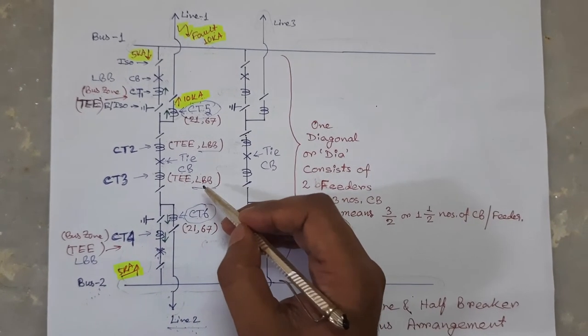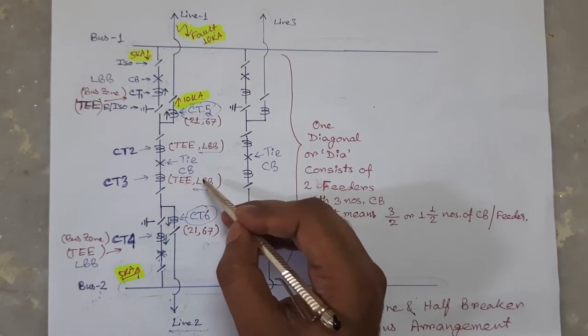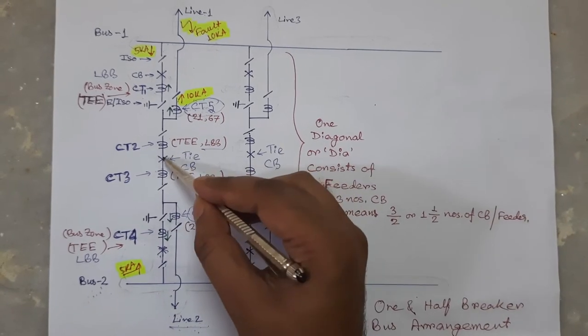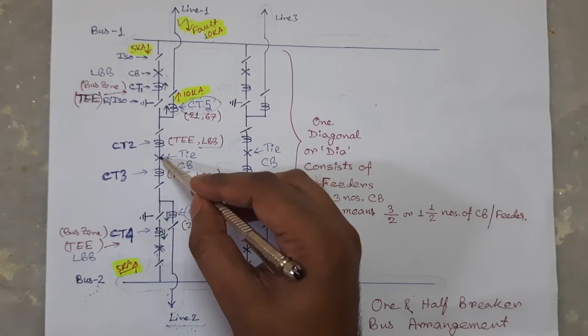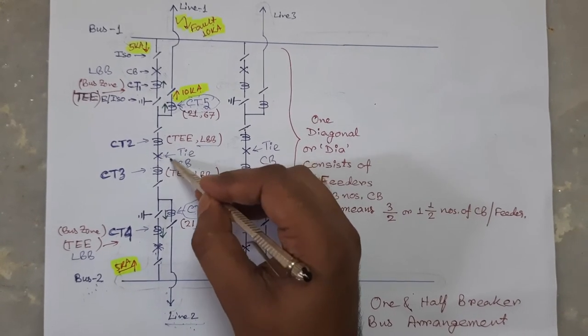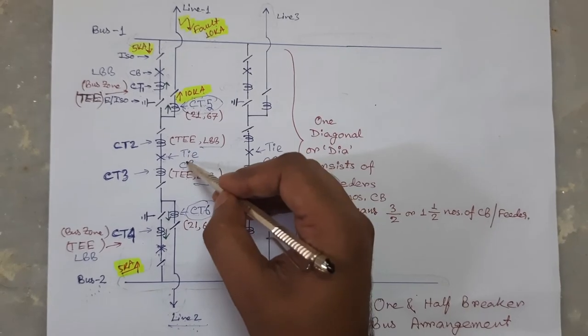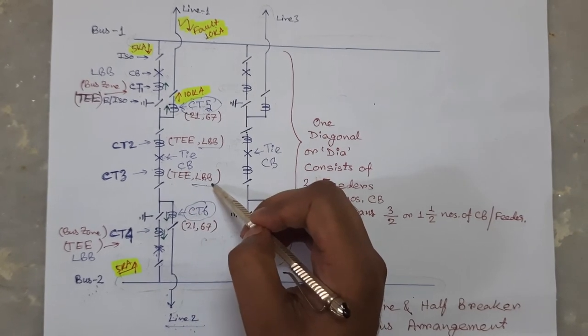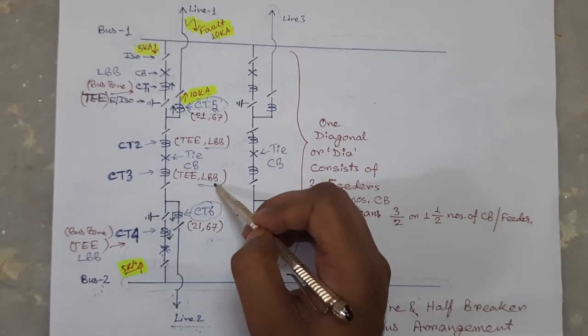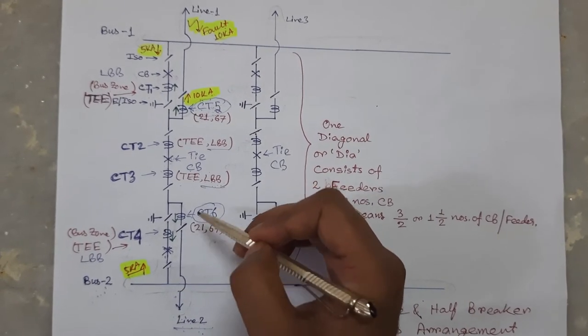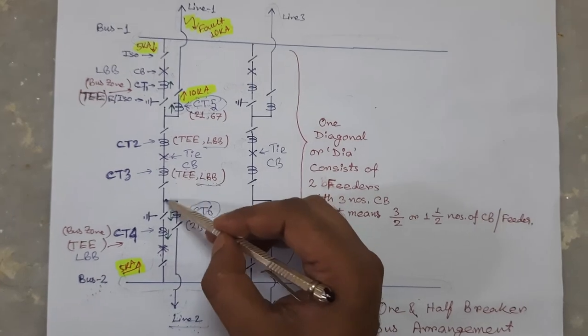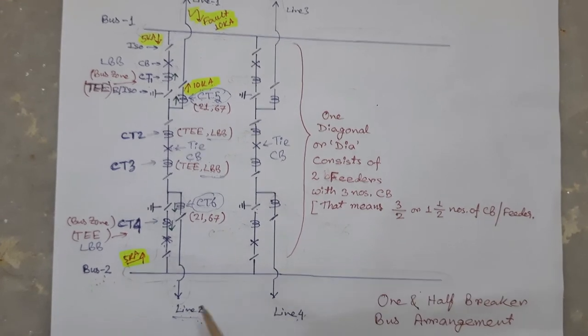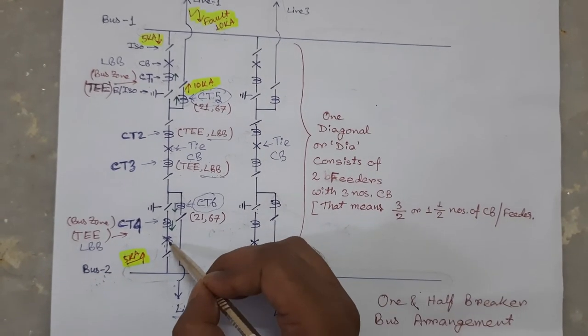after waiting the predefined time delay of 200 millisecond, tie LBB protection understands that this circuit breaker is not clearing the fault or this tie circuit breaker is unable to clear the fault. In that case, to clear the fault immediately, this tie LBB protection will operate and send trip command to this circuit breaker and also send a direct trip pulse to remote end of this line such that this line and this circuit breaker becomes dead.